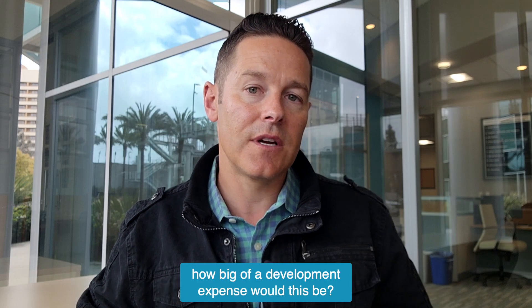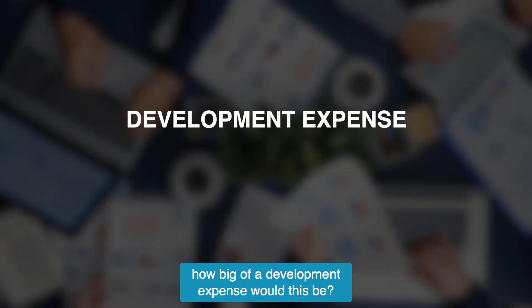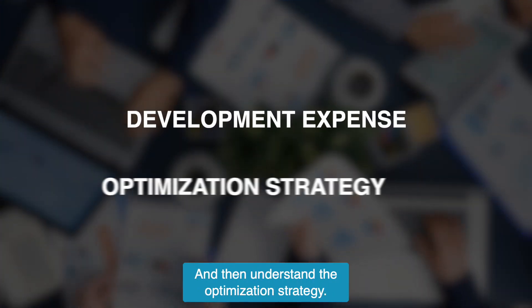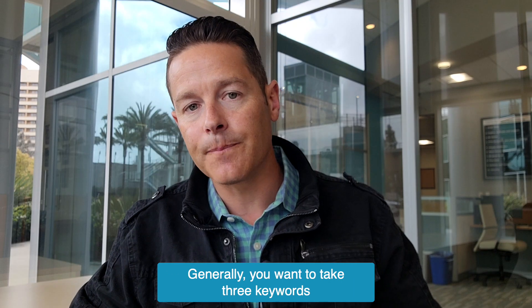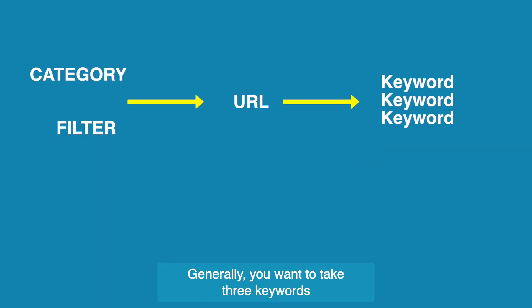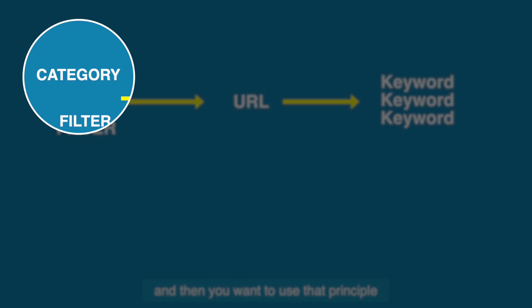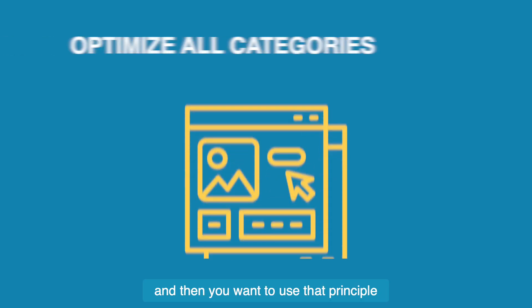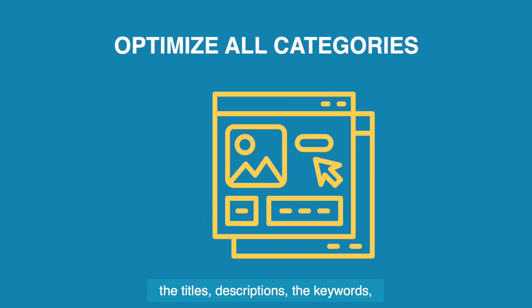After you've answered those questions, you want to think about how big of a development expense this would be, and then understand the optimization strategy. Generally, you want to take three keywords and the category name, and use that principle to optimize all the categories at once.